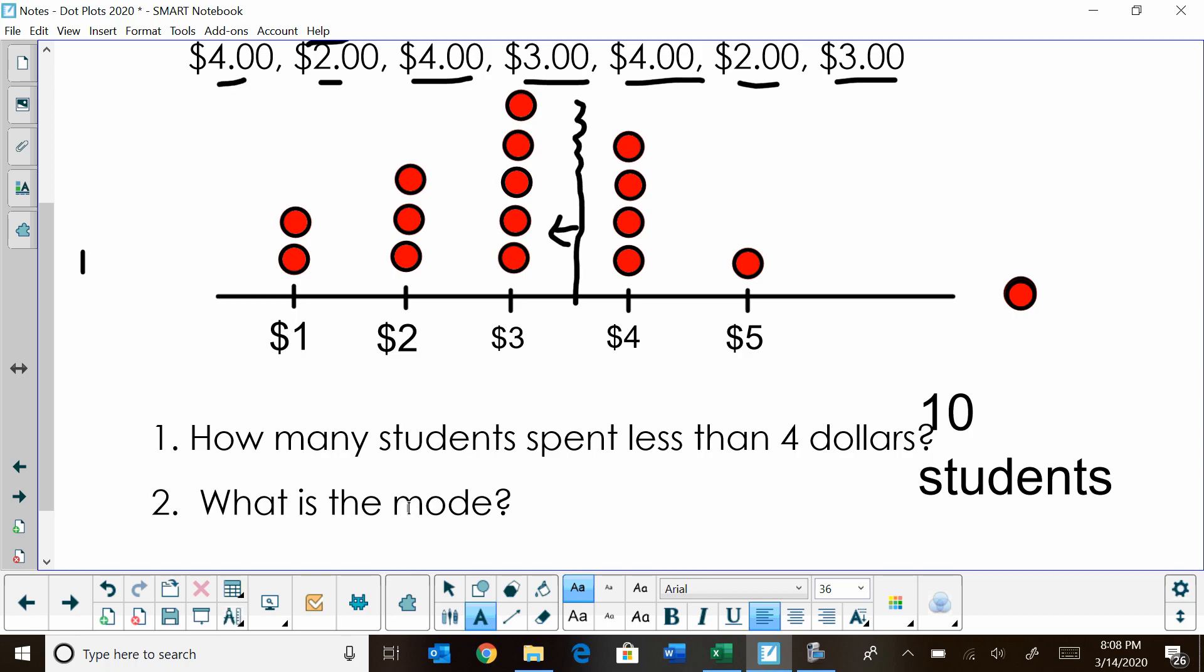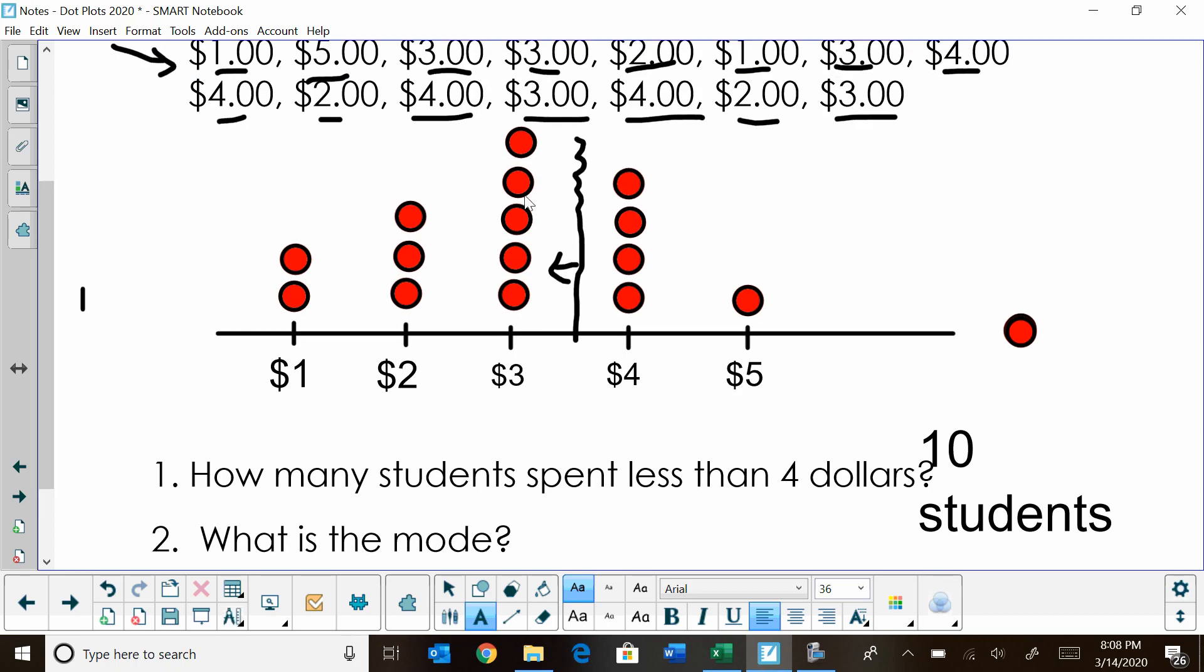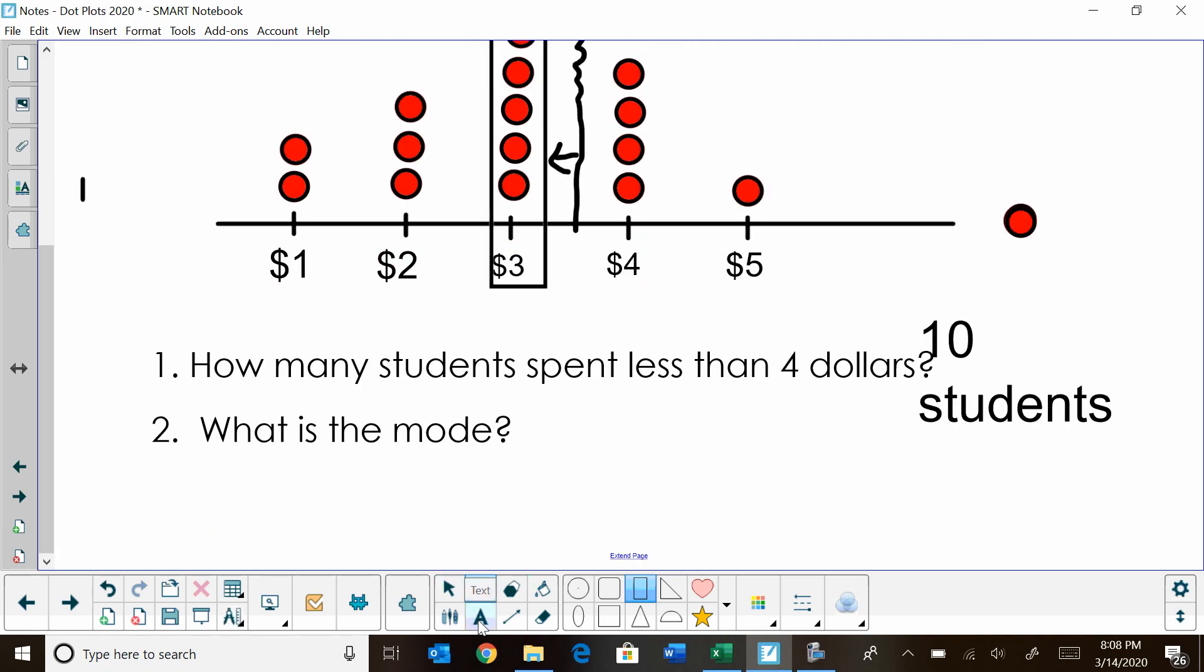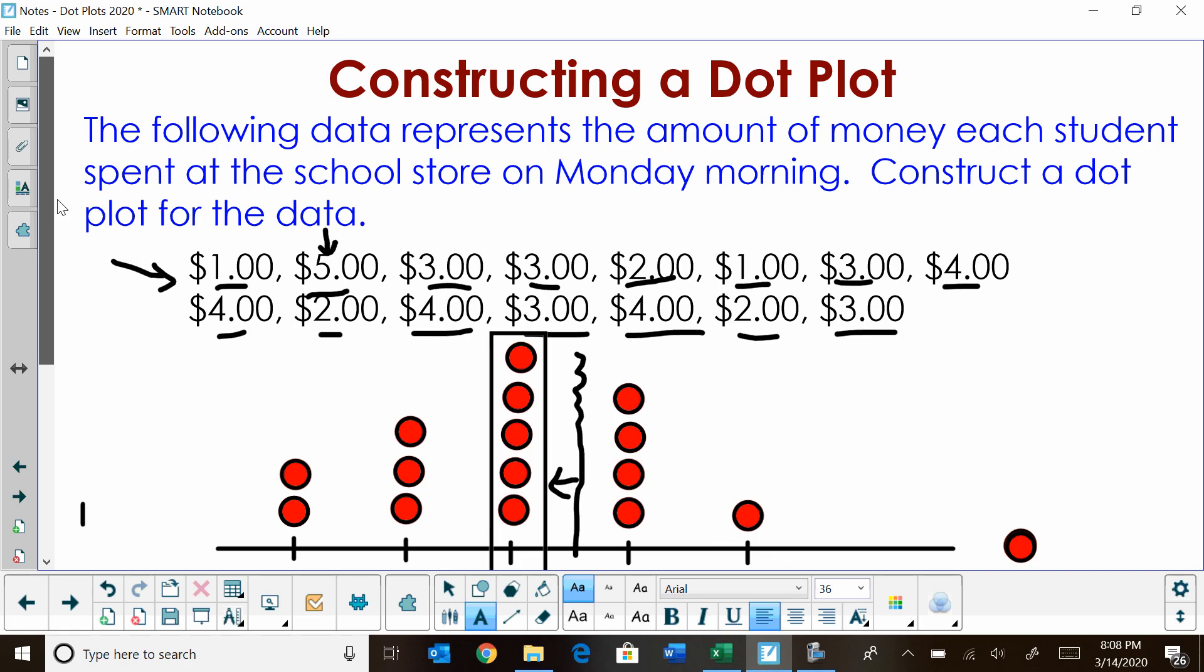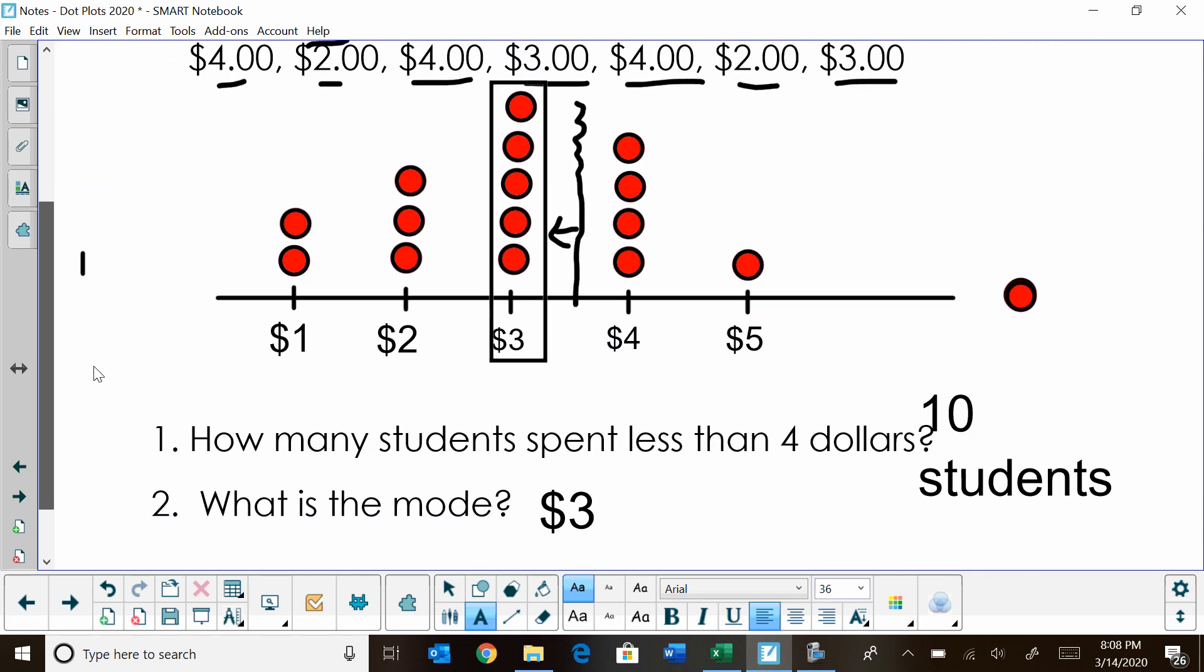What is the most occurring data point? Because it's a dot plot, we can literally look at which one's the tallest one. In this case, our tallest column of dots is $3. So what is the mode? The mode would be $3. And there you go. That's how you read or construct a dot plot. And then you can use your dot plot to interpret and answer questions. I hope this video has been helpful on learning how to read and construct dot plots.